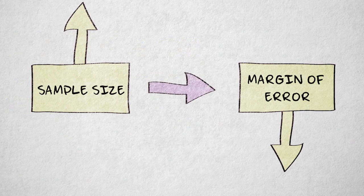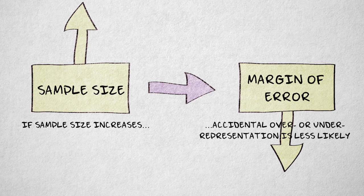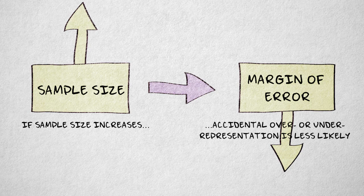Because as sample size increases, the margin of error will decrease. Accidental over or under-representation of certain elements will be less extreme and will become less likely.